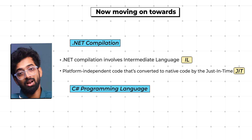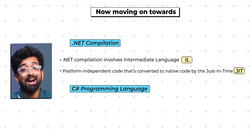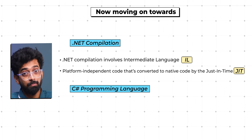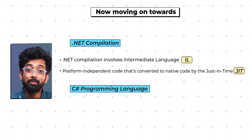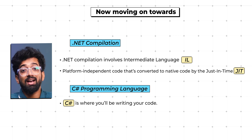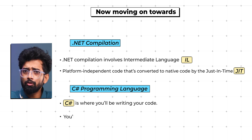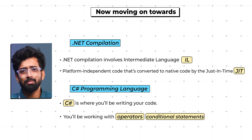And of course we can't forget C#. From data types and variables to loops and strings, C# is where you'll be writing your code. Think of it as your Swiss Army knife — versatile and essential. You'll be working with operators, conditions, conditional statements, arrays, and more. These basics are your foundation for everything that comes next.